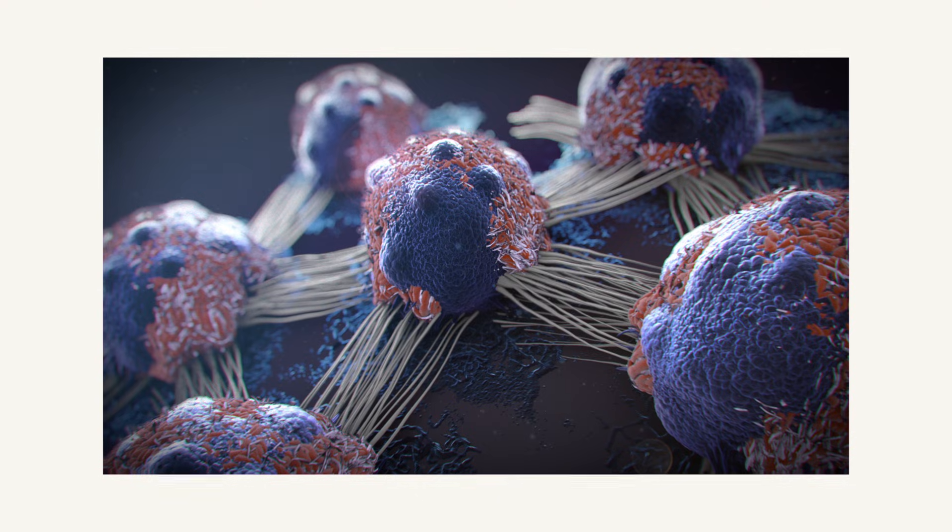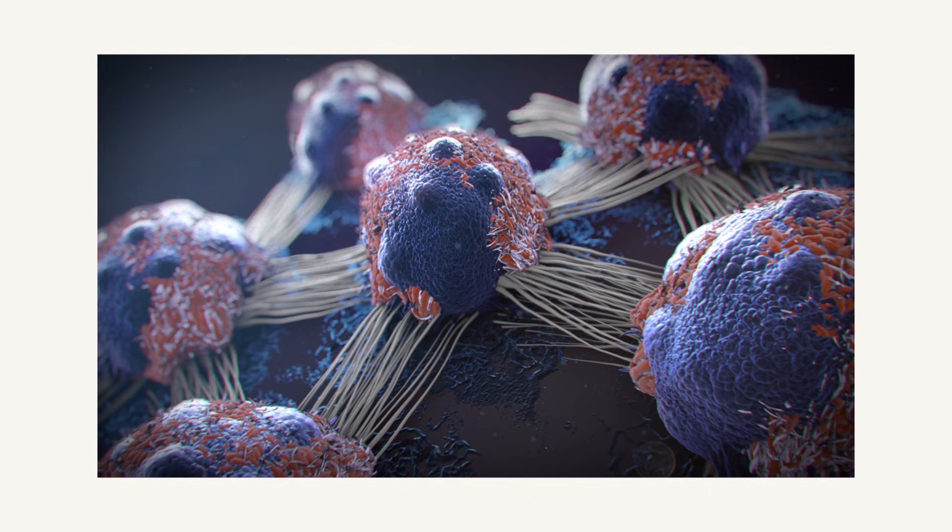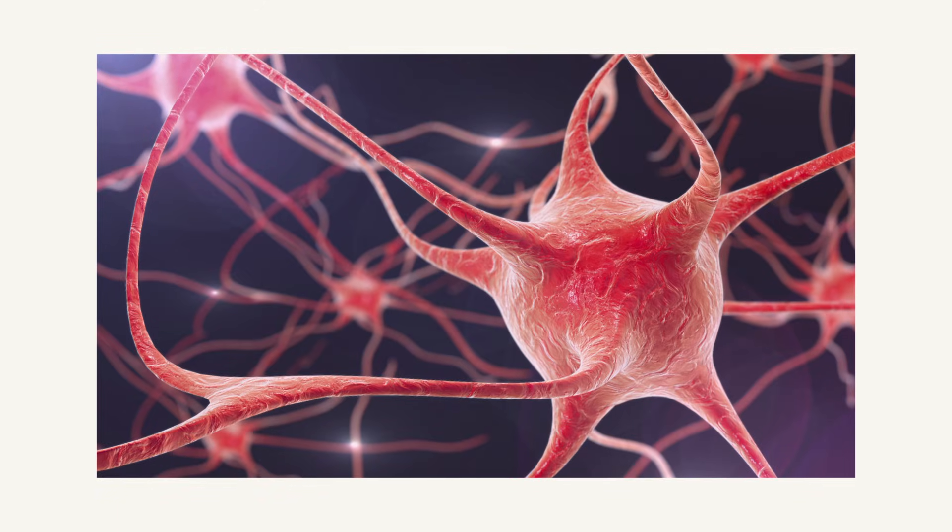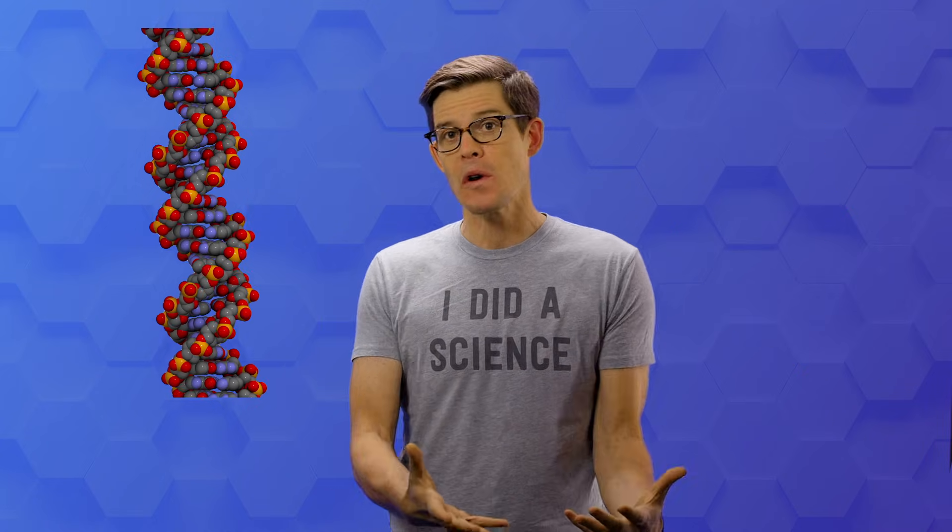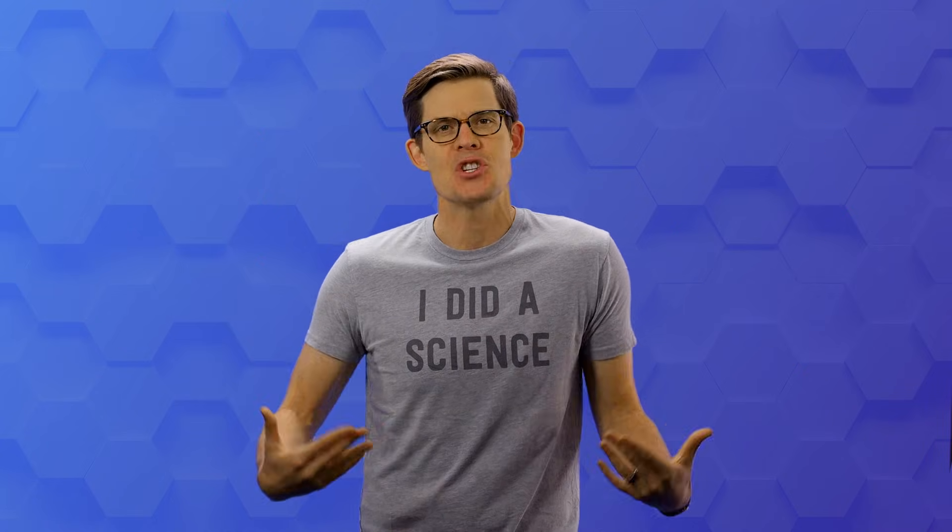This organization is important to how cells function normally, but it's also a part of how diseases like cancer arise, even how different cells behave inside the brain. Simplified ways of looking at DNA are useful. They help us learn, they help us tell stories about how these complicated machines work. But it's important to remember that's not the whole story.